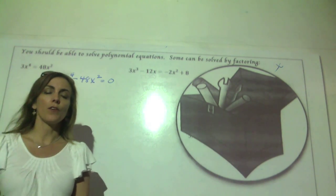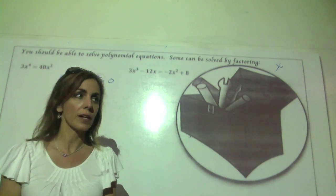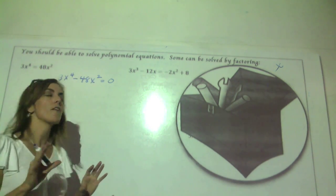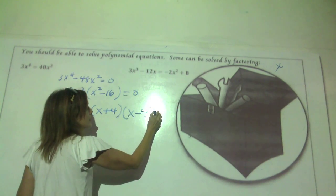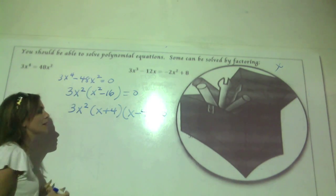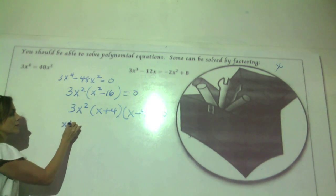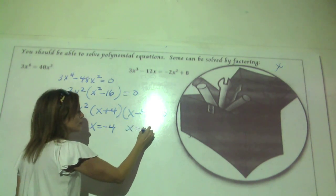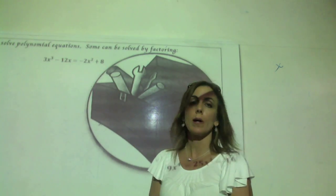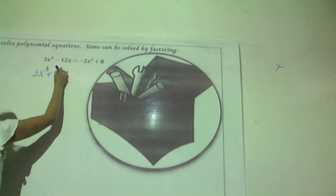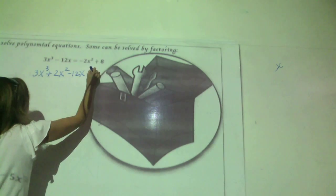Let's start with something like this: 3x to the 4th minus 48x squared. Whenever you're solving an equation like this — the only time you don't use this first technique is with a linear equation — we want to pull everything to one side of the equation and set it equal to zero. For a linear equation, when the highest degree is just one, we want all x terms on one side and all constants on the other. Here, we rearrange so everything is on one side: 3x to the 4th minus 48x squared equals zero.